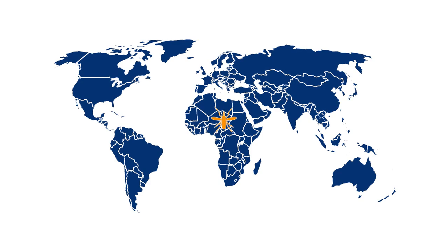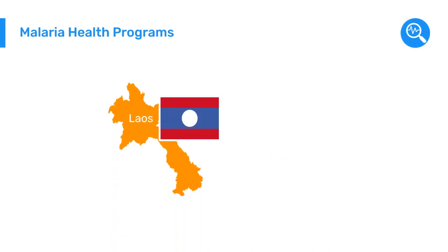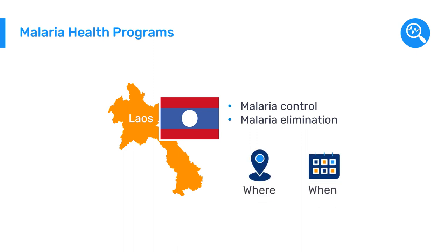Malaria is a life-threatening infectious disease that is present in many tropical countries. To control its spread, health authorities in Laos have implemented malaria control and elimination programs. Effective management of these programs requires the collection of detailed information on where and when malaria cases occur.